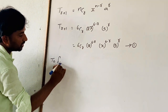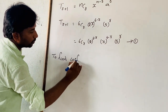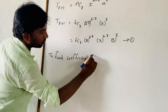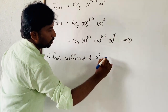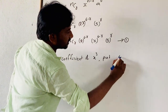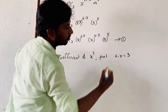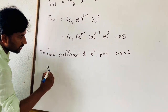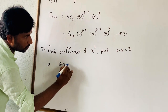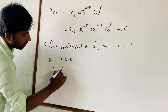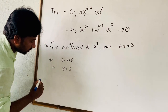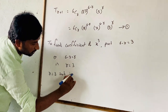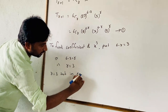To find the coefficient of x³, put 6 minus r equal to 3. Then that implies 6 minus 3 is equal to r, so r is equal to 3.